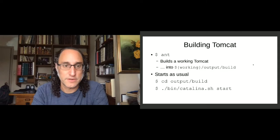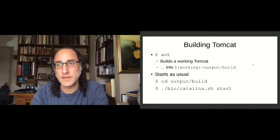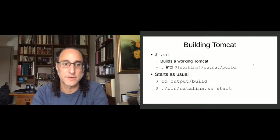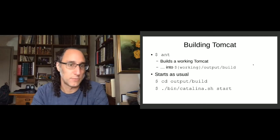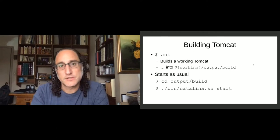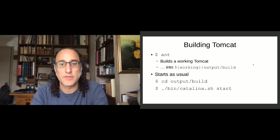If you want to start Tomcat, you can change directory to output/build — that output/build directory is what your CATALINA_HOME will be for this built server. Then you can run bin/catalina.sh start or bin/startup.sh or whatever you prefer. Those instructions are identical for Windows versus Unix systems — instead of running the .sh file, you run the batch file instead.